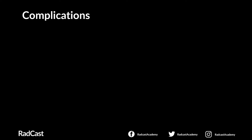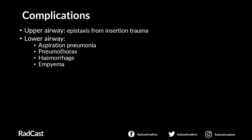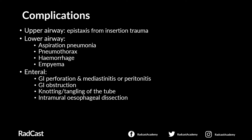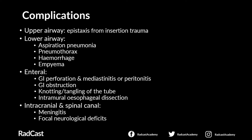Complications associated with NG tubes occur in about one to three percent of cases, with fatal sequelae in approximately 0.3 percent. These include upper airway complications such as epistaxis from insertion trauma; lower airway complications such as aspiration pneumonia if a tube incorrectly placed in the lung is used for feeding, pneumothorax, haemorrhage, and empyema; enteral GI perforation and mediastinitis or peritonitis; GI obstruction; knotting or tangling of the tube; intramural oesophageal dissection; and rarely intracranial or spinal canal complications such as meningitis or focal neurological deficits.